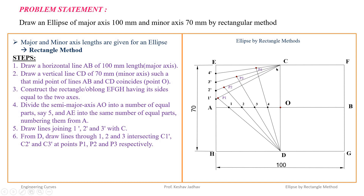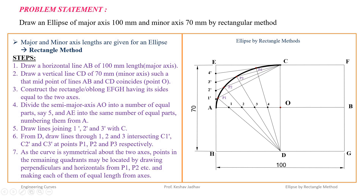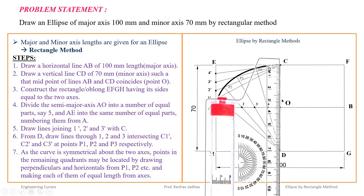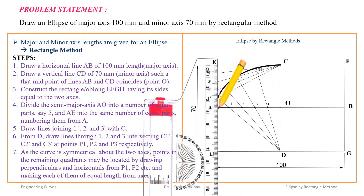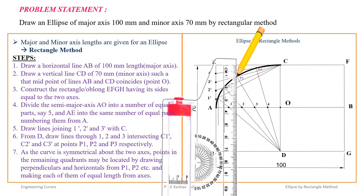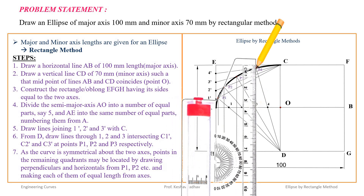Join these points by a smooth curve to get one quarter of the ellipse. Once we have one quarter, the other parts can be drawn by symmetry. On the lower side of AO we will get a similar curve. Use a parallel rule to draw vertical lines passing through P1, P2, P3, and P4.